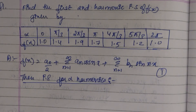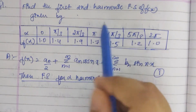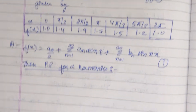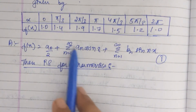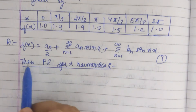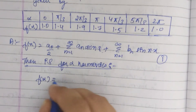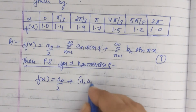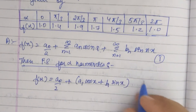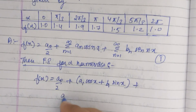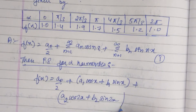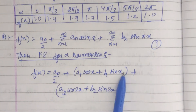Let us take a question under harmonic analysis: find the first and second harmonic of the Fourier series given by a table of x values. The formula is f(x) = a0/2 + summation of an·cos(nx) + summation of bn·sin(nx). For two harmonics, f(x) = a0/2 + a1·cos(x) + b1·sin(x) [first harmonic] + a2·cos(2x) + b2·sin(2x) [second harmonic].